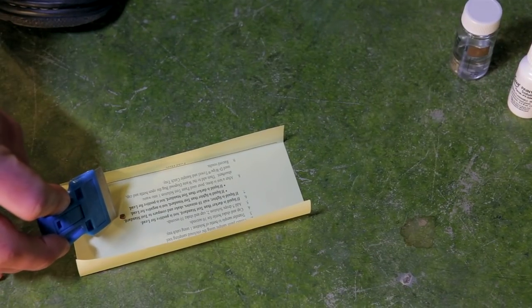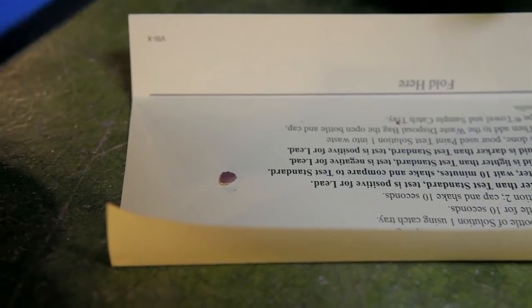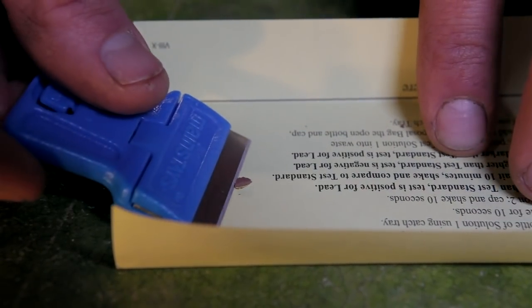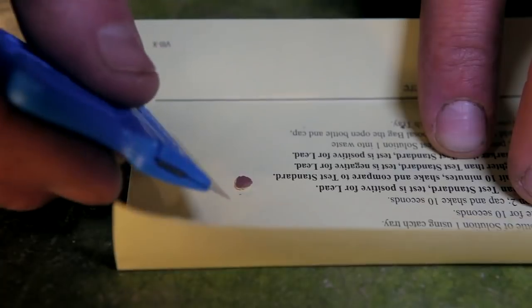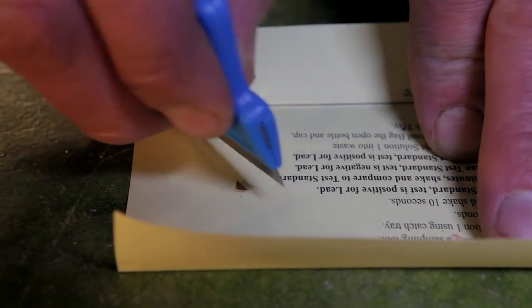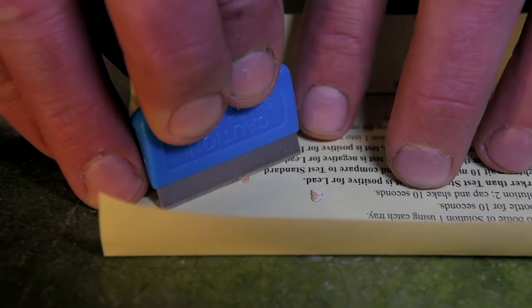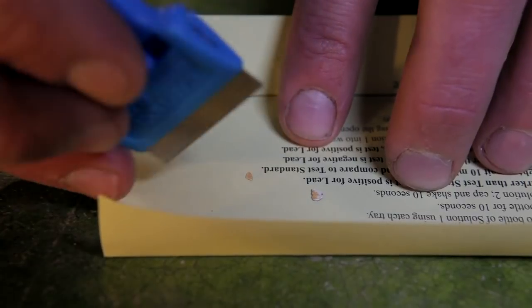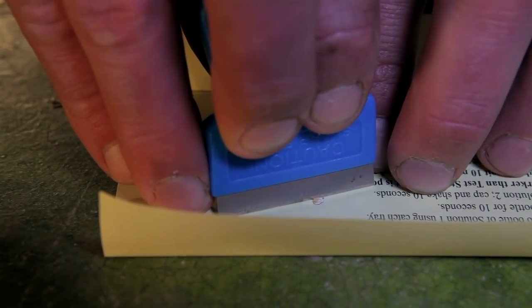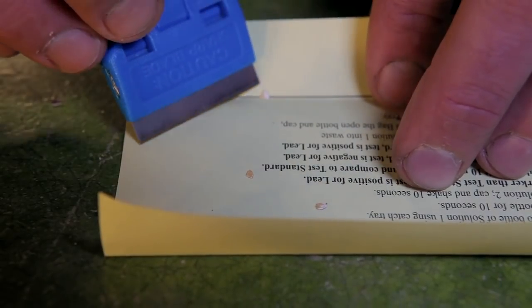To make this go a bit faster, we're going to cut this into four different pieces. We'll take our clean razor blade and cut this into at least four pieces. The more surface area you have, the better it is for the test, but you have to be very careful because brittle paint can kind of get all over the place.